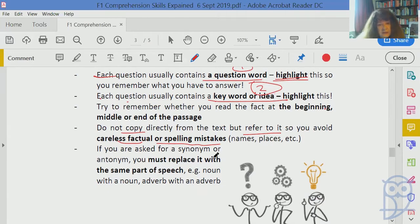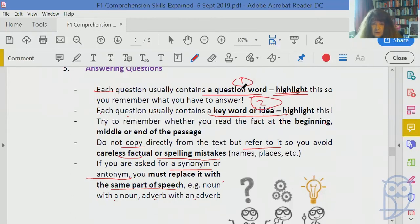In the grammar section, they might ask for a synonym, a word that's similar, or an antonym, the opposite. You must replace this with the same part of speech - a noun with a noun, an adverb with an adverb, or it will be wrong. That's why, as we said earlier, what is the function of that word in a sentence? So that helps you with looking at questions - is it why, where, when, what, how? That's a question word. The keyword or idea, what they're asking about.